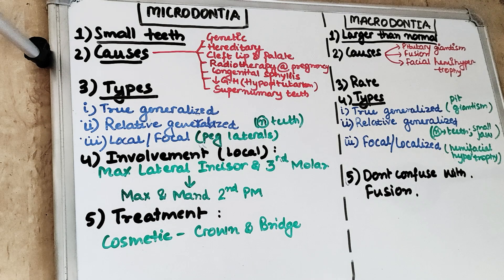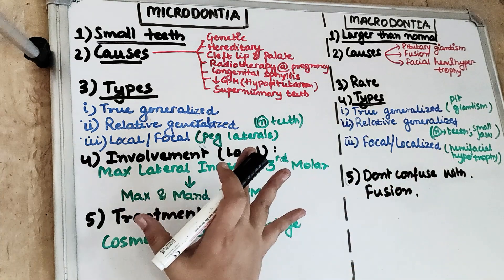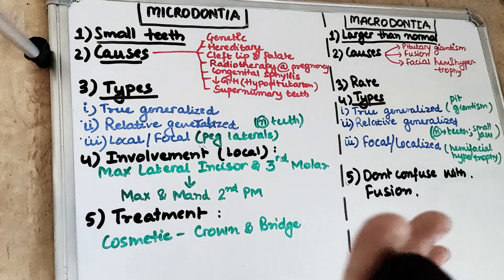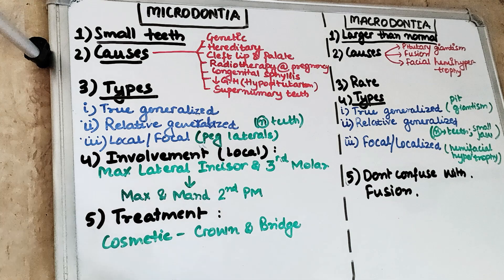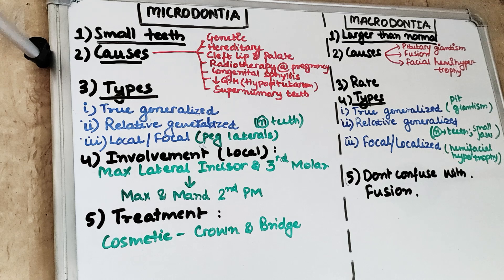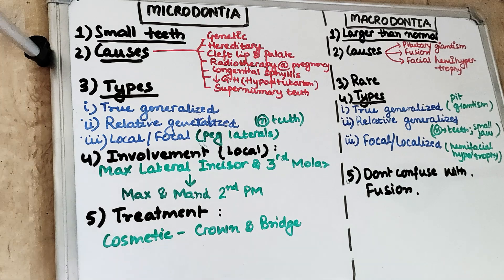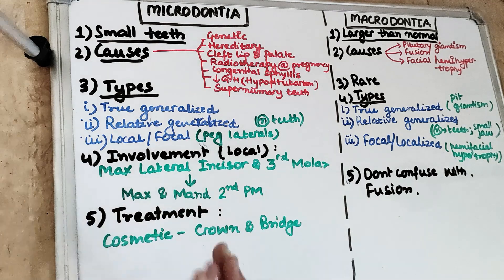Before we start, this is part of the 5-in-5 series in which we are going to cover each topic under 5 headings in 5 minutes, and most of the topics' headings are covered by 5 subheadings. Today's topic we are going to talk about Microdontia and Macrodontia. Make sure you subscribe to our channel and click on the bell icon. These are the developmental abnormalities of the tooth in which there is a disturbance in the size of the teeth.